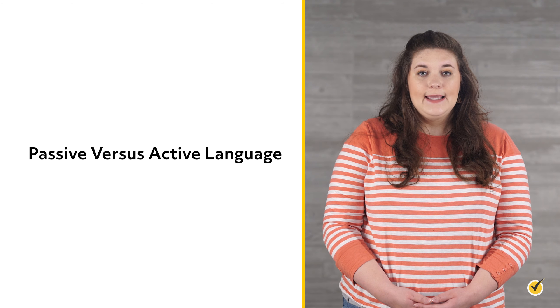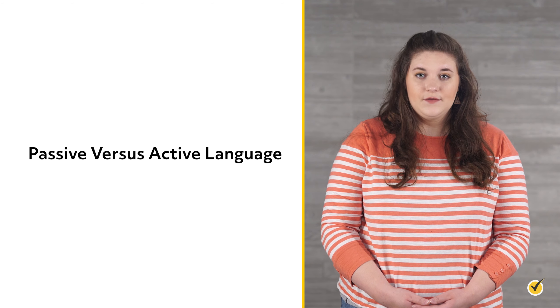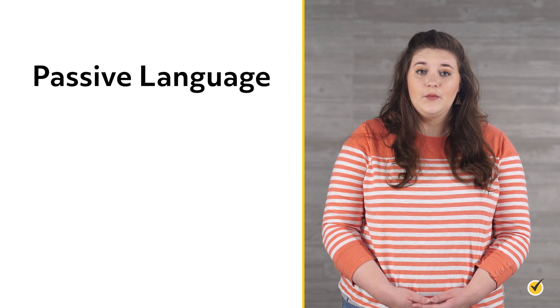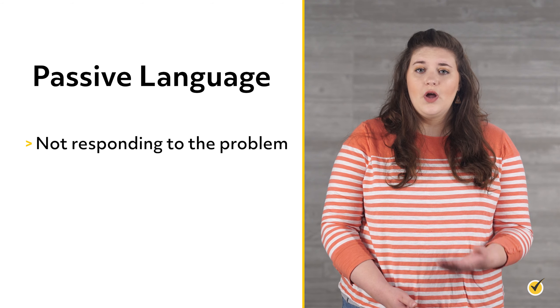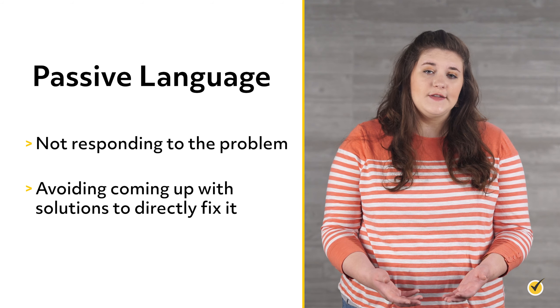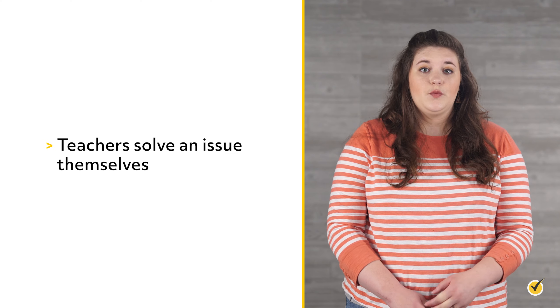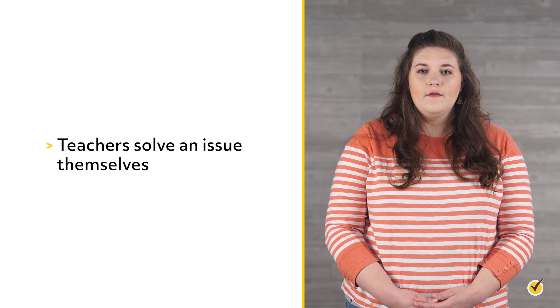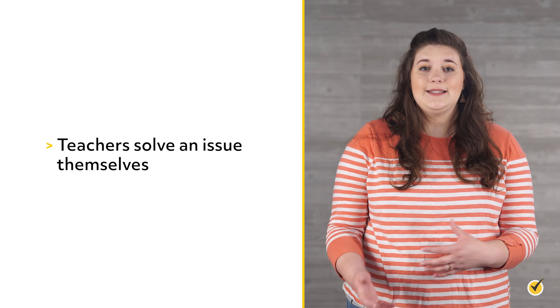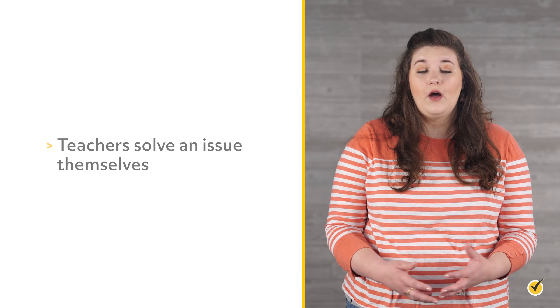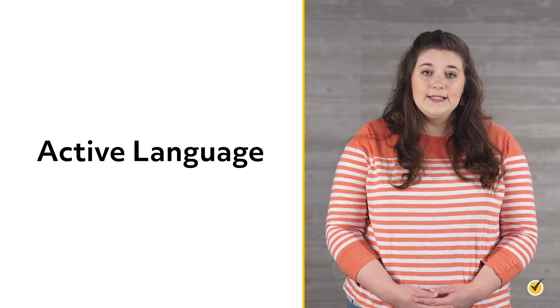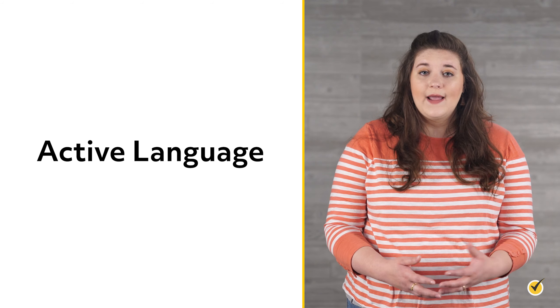Another important strategy to look for when taking the exam is recognizing the difference between passive and active language. Answer choices which contain passive language are likely to indicate that a teacher is either not responding to the problem or is avoiding coming up with solutions to directly fix it. These types of answer choices can involve moving the child to a more restrictive situation to avoid the problem or referring the problem to a source outside of the classroom unnecessarily. These types of answer choices are generally incorrect. Another type of answer choice which will often be incorrect is one in which teachers solve an issue themselves rather than using the situation as a teaching opportunity to help students learn problem solving on their own. Answer choices containing active language, which indicate that the teacher is trying to solve the problem, are more likely to be correct.